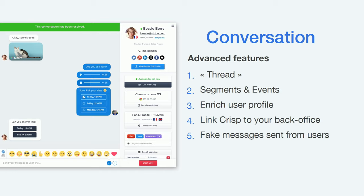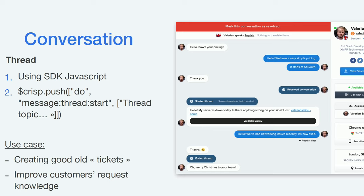Now let's look at the five key advanced features. First is Threads — like traditional tickets, they help you add context about why the customer is contacting you. Then Segments and Events, how to enrich user profiles or link CRISP to your back office, and how to send proactive messages from the user side.